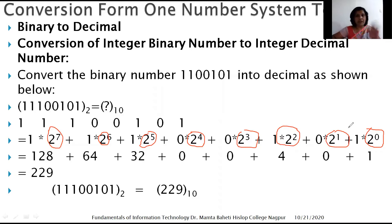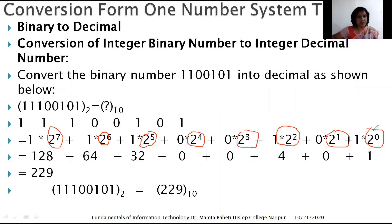Multiply the weights with the digits. 2⁰ gives 1; any number raised to the power 0 gives 1. 2¹ gives 2. 2² gives 4. A trick: any number multiplied by 0 returns 0, so wherever there is a 0 bit, directly put 0 — that makes the work easier.